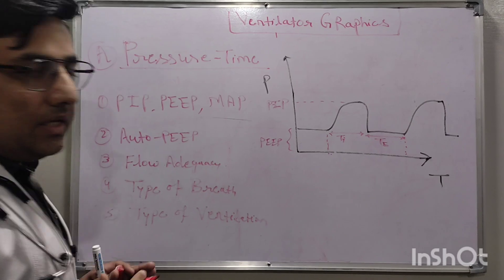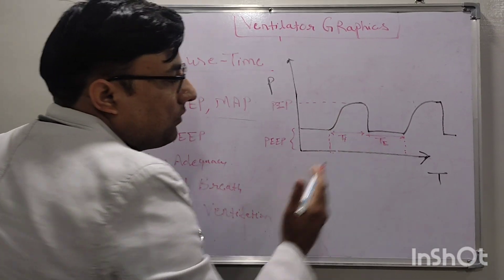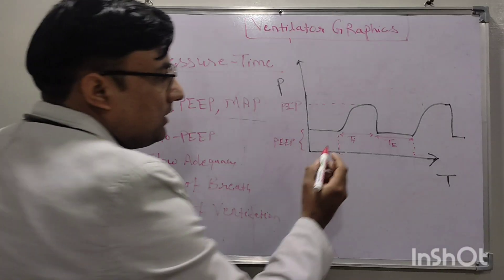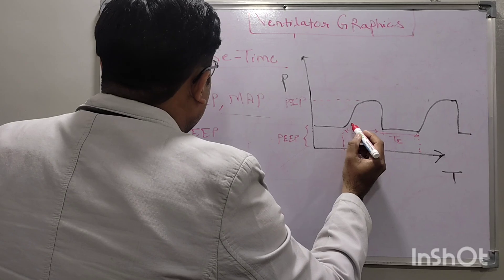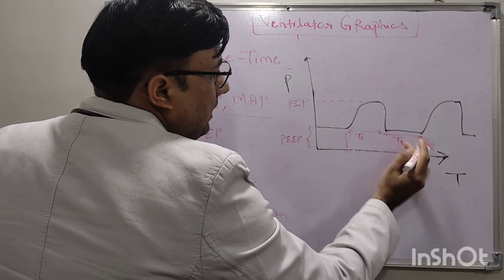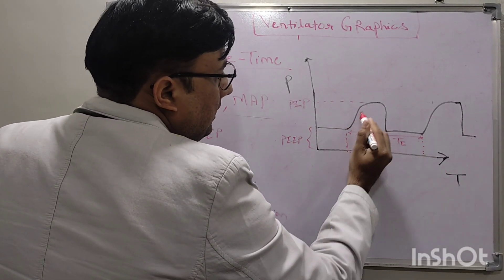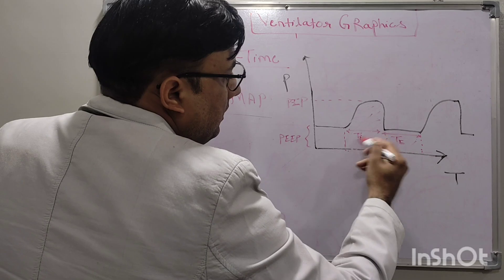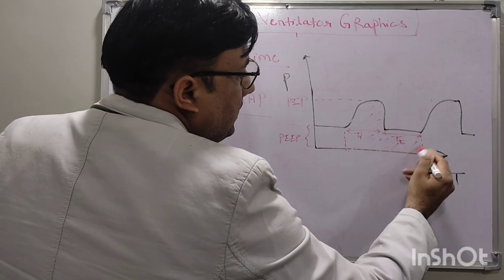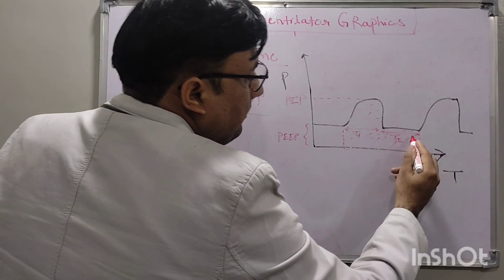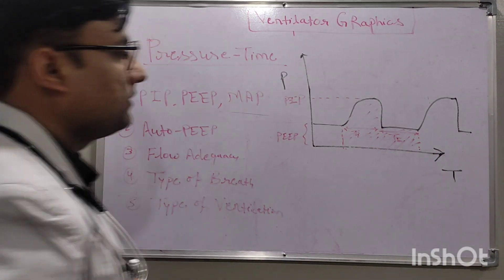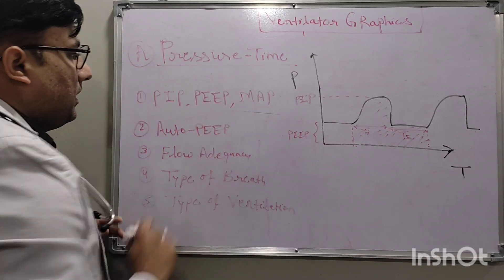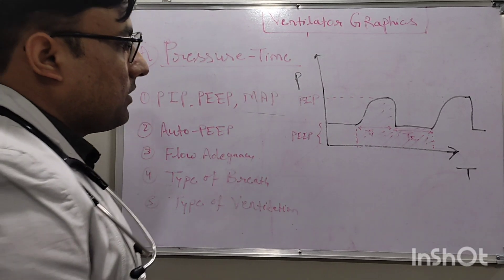Mean airway pressure is the area under the curve of a full respiratory cycle. So the area under this entire cycle represents the mean airway pressure — these are the things we can see in the pressure-time curve.